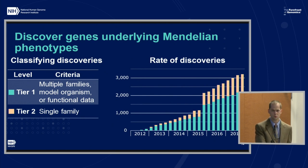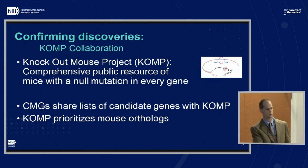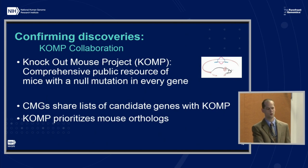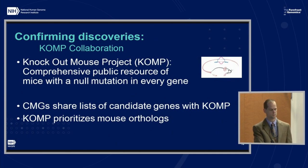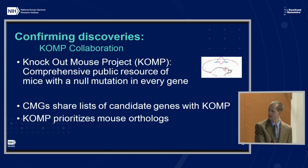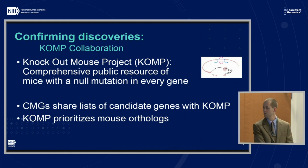Model organisms are one approach. We don't directly fund the CMGs for that, so about a year and a half ago they started a collaboration with COMP — the Knockout Mouse Project — which aims to make a comprehensive public resource of mice with a null mutation in every gene. The CMGs share candidate variants with COMP, and COMP is able to prioritize some of the mouse orthologs. It ends up being a nice example of collaboration between two of our resources.